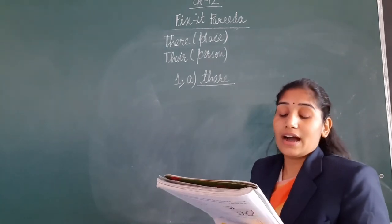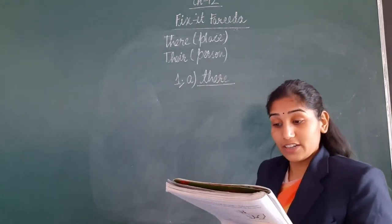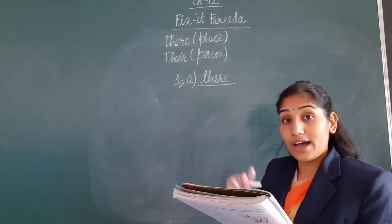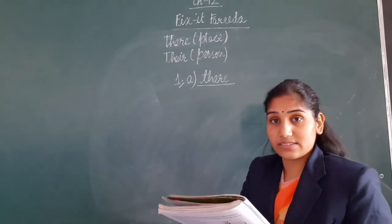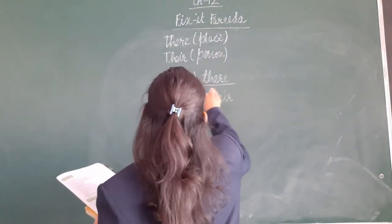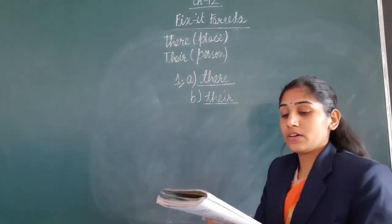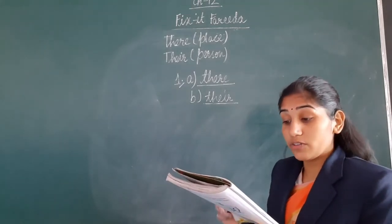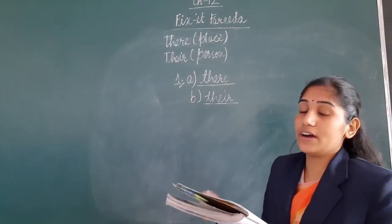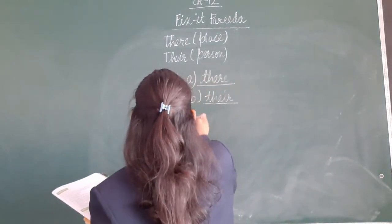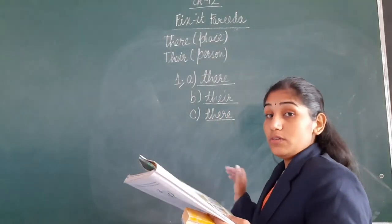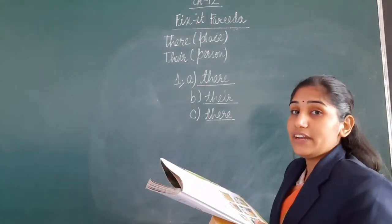Part B: 'I have to call the Smiths. Do you have ___ phone number?' They are talking about the Smiths, which means they are talking about a person. So we will write T-H-E-I-R: their. Part C: 'Do you see that man standing over there?' Here we are indicating a place. So we will write T-H-E-R-E: there.